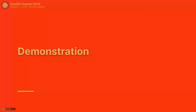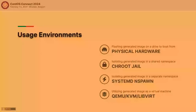Let's talk about a demonstration of how these images can be used. We can use them on physical hardware by flashing the raw archive image to a flash drive — though I wouldn't suggest that due to read/write speeds — or to an NVMe SSD or SD card for a Raspberry Pi. Or you can run it in a chroot jail for debugging or running applications in a limited-scope shared namespace. Or use systemd-nspawn as a container for separate namespace isolation. Finally, you can virtualize it using QEMU, KVM, or libvirt — use those to treat it as a machine image and it works just fine.